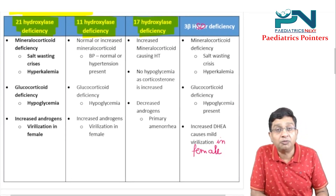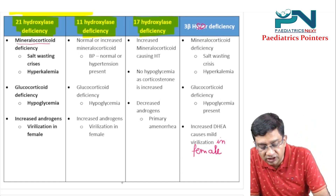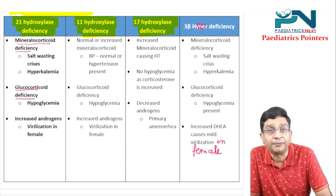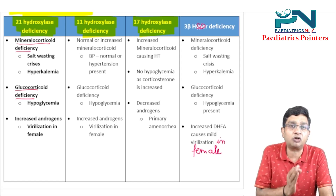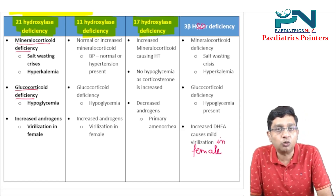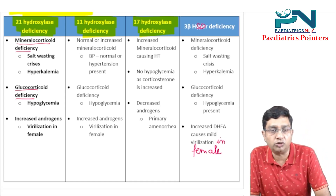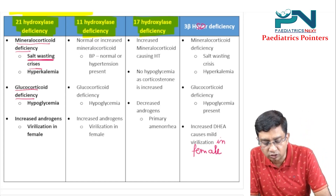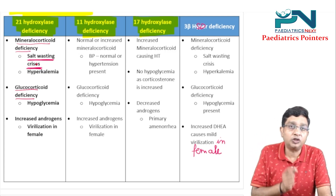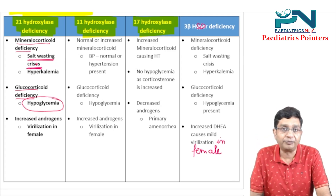First, consider 21-hydroxylase deficiency. Remember two things: mineralocorticoid deficiency and glucocorticoid deficiency. Due to mineralocorticoid deficiency, there is hyponatremia, hypovolemia, and hypotension, and on the other hand, hyperkalemia. Sodium is lost in urine, and along with sodium, chloride is also lost in urine. This is given the name salt wasting crisis.